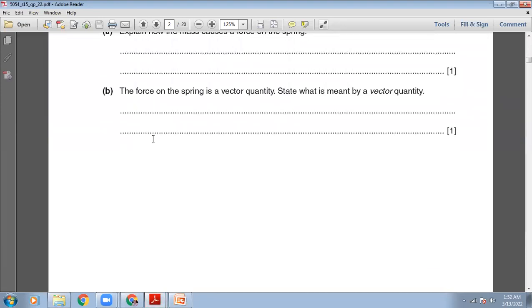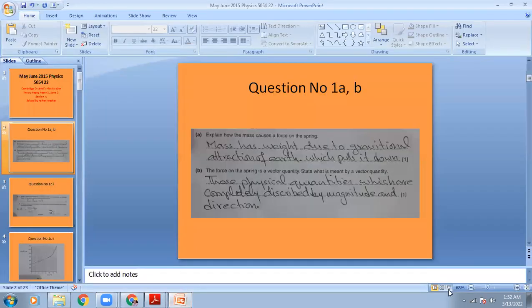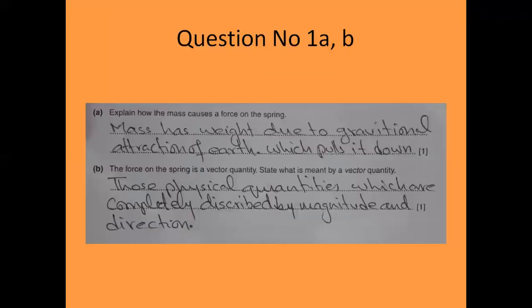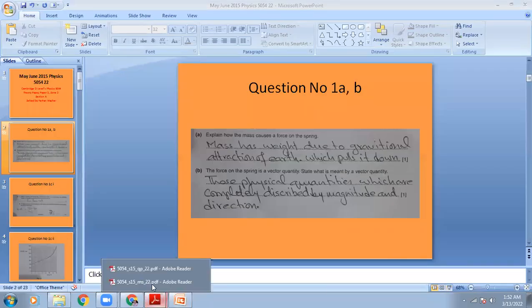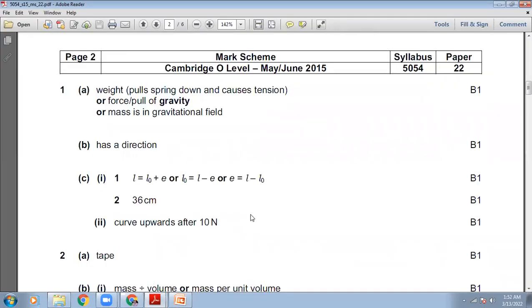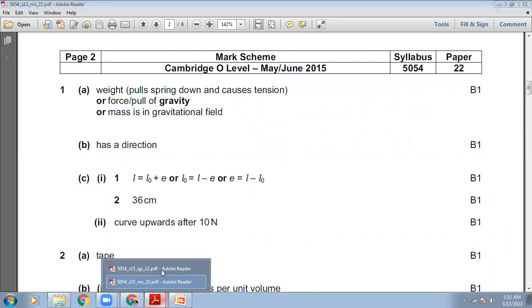The force on the spring is a vector quantity. State what is meant by a vector quantity. Vector quantities are those physical quantities which can be completely described by magnitude and direction. Written answer: those physical quantities which are completely described by magnitude and direction are known as vector quantities. The marking scheme says: has direction.